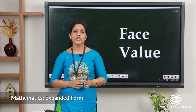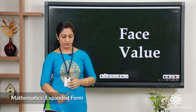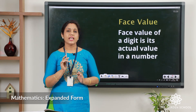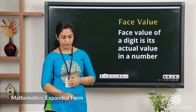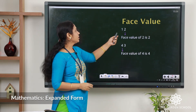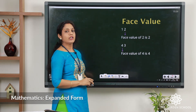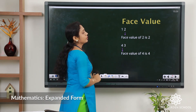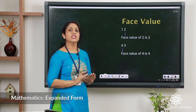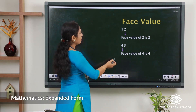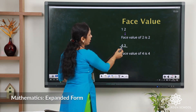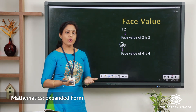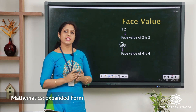Next we are moving to face value. Face value of a digit is the number itself. For example, in the number 12, the face value of 2 is 2 itself. Here in the number 43, the face value of 4 is 4 itself — that is the number itself.